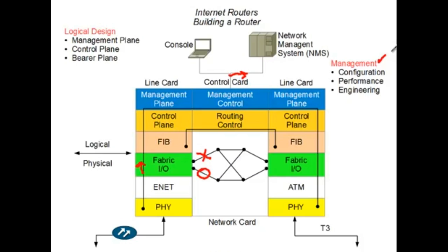Also note that different line cards can implement different link layers, and you can have quite a range of high-speed and low-speed interface cards. They are all designed to use the same network fabric, so once the IP datagrams reach the fabric, the fabric has no way of knowing one kind of link layer from another — it's just passed across, and then the appropriate protocol is used to deliver it.